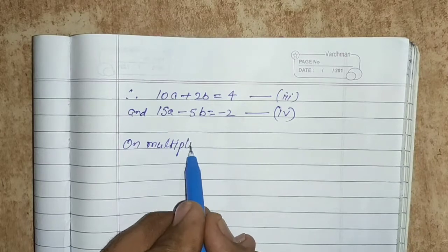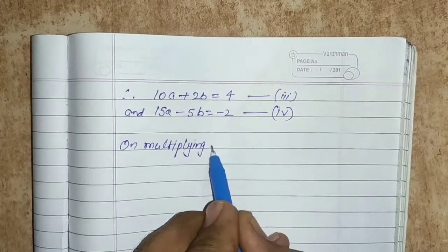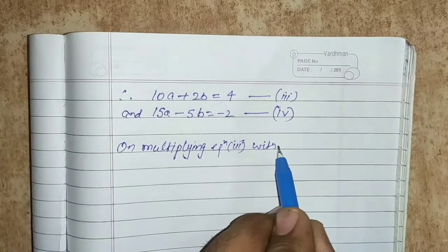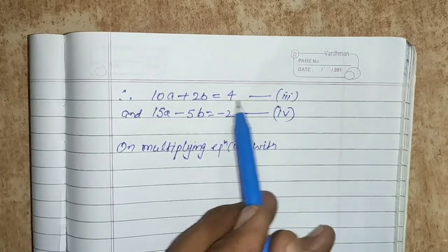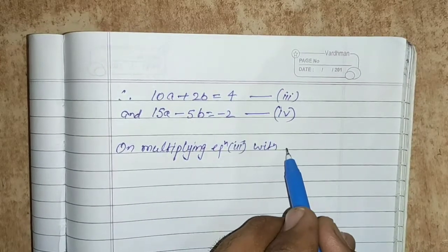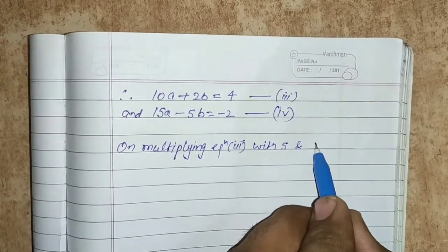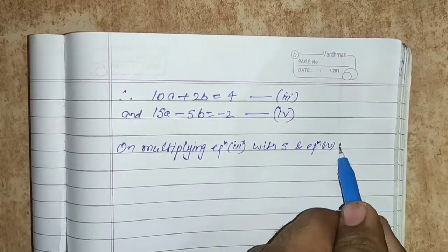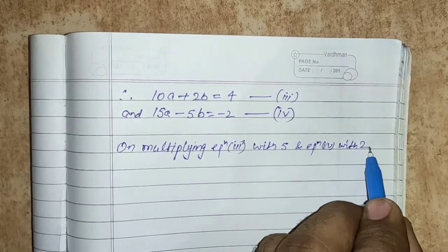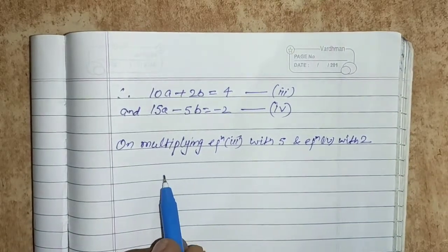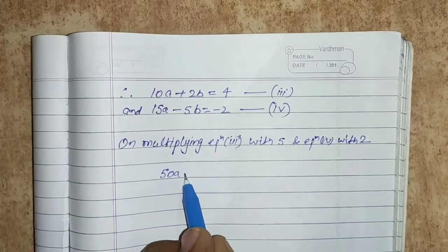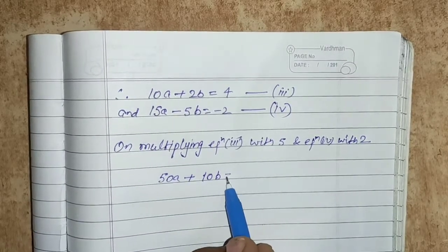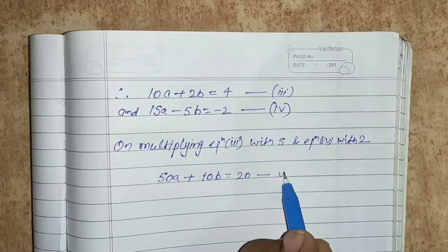We will eliminate b. Multiplying equation 3 by 5 gives 50a plus 10b equals to 20. This is equation number 5. Multiplying equation 4 by 2 gives 30a minus 10b equals to minus 4. This is equation number 6.